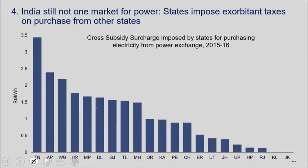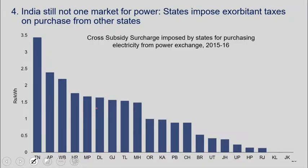The genesis for this is clear: if you allowed a company in one state to buy from another state, you could not sustain your own cross-subsidization. Nobody would buy domestically, and your distribution companies would become totally bankrupt. So these inter-state cross-subsidy surcharges are actually a consequence of wanting to maintain cross-subsidization within the state. This impedes one market in power — different states impose exorbitant taxes on purchases from other states, so we do not have one market in power.